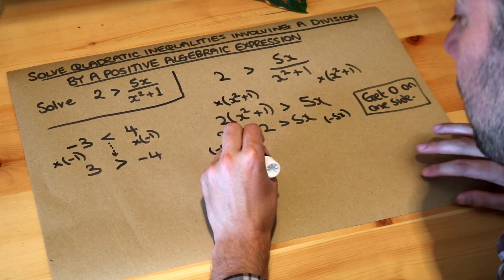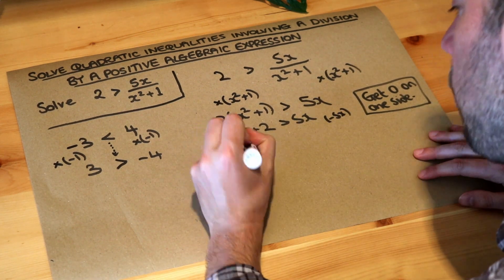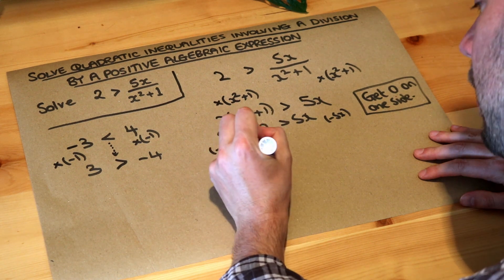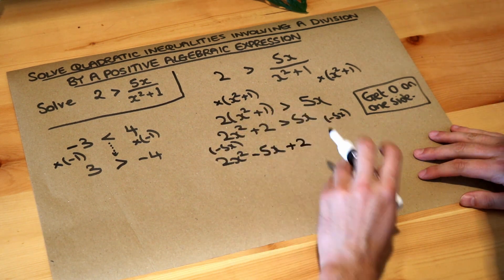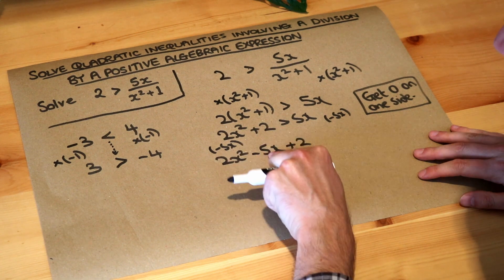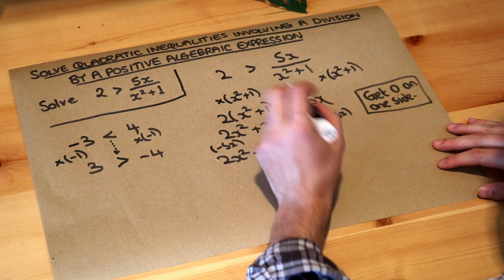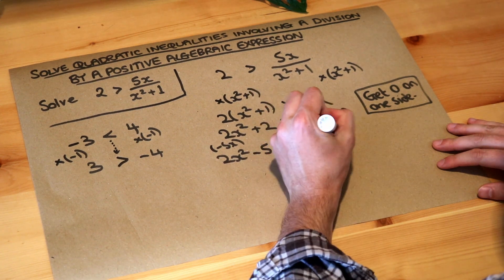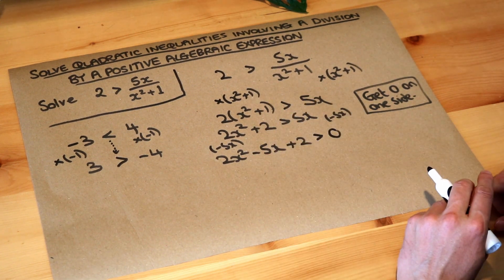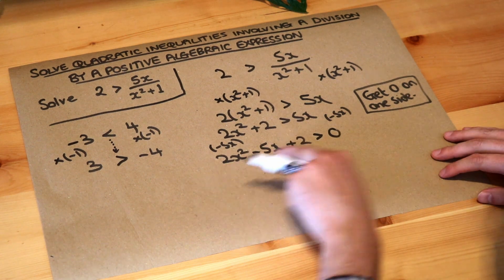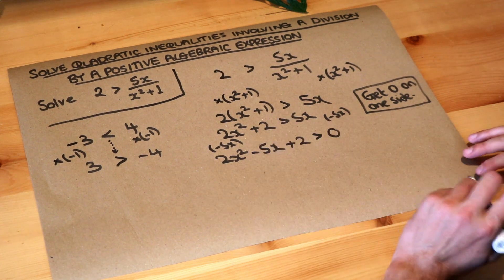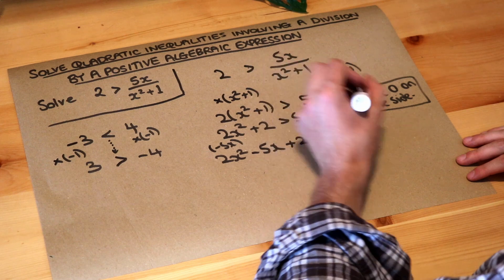So we want the x squared term first, then we want the x term so minus 5x, and then what we call the constant term, the non-x term. So it should be x squared then x term then the number term, and we subtract 5x from this. 5x minus 5x is just zero. So now we've got a much more convenient form. Once we've got it in this form where zero is on one side, as we saw in previous videos, we factorize.